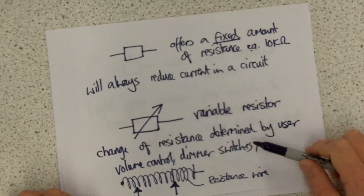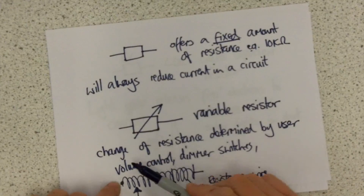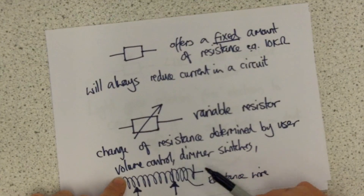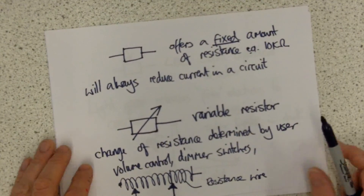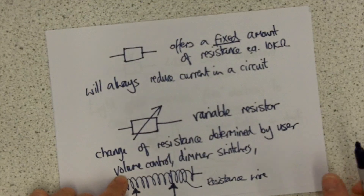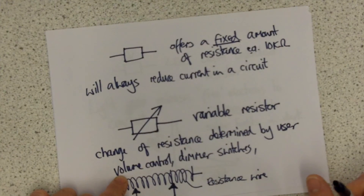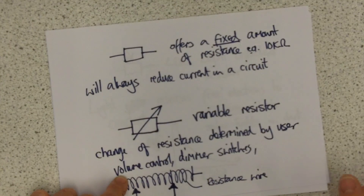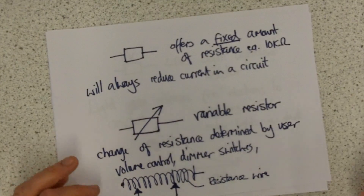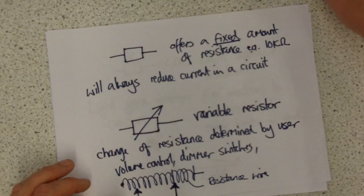Just going back through: a variable resistor is one where a person controls the amount of resistance in order to control the current. For example, in volume control, if you want your music loud, you'd have your resistance set to low, which means you get a bigger current to your speakers, which makes the speakers move more to give you a loud sound.